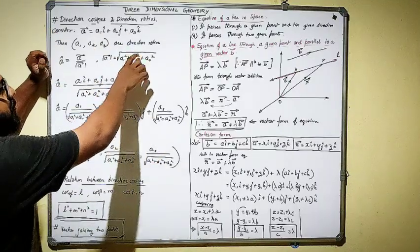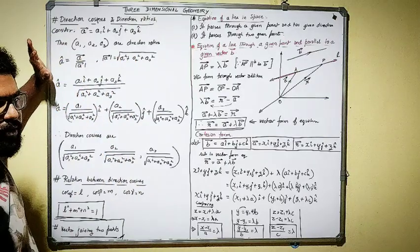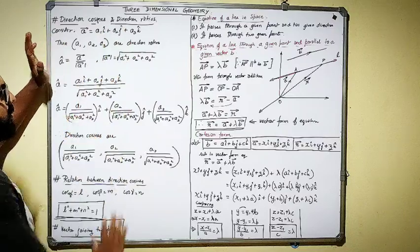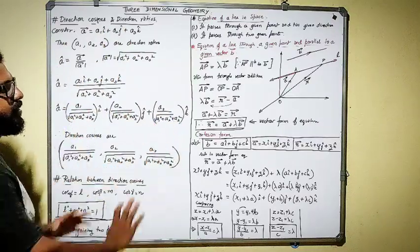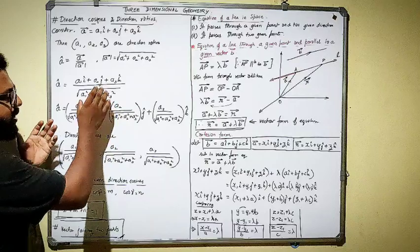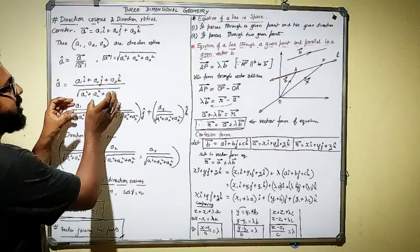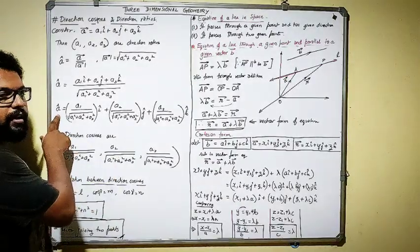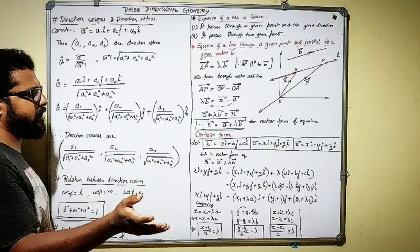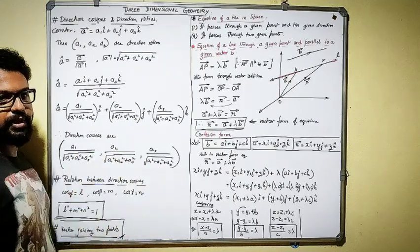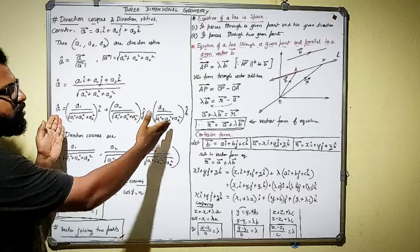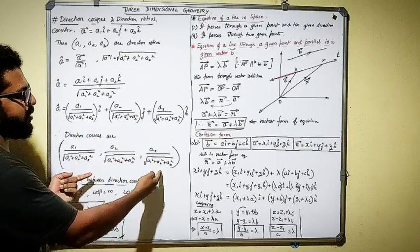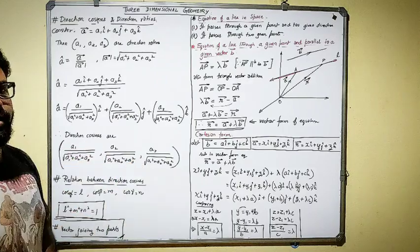So I find the magnitude — square root of a1² + a2² + a3² — and divide the full vector by it. Individually I separate the denominators and write it in component form. That is the component form of a unit vector. The components of a unit vector are nothing but the direction cosines.